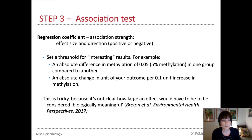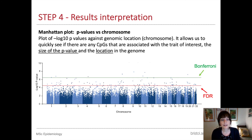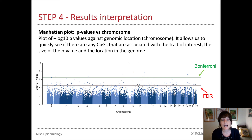The next step in running an EWAS is to examine and interpret the results. Data visualisations can really help with this. A Manhattan plot shows minus log10 p-values for the EWAS results on the y-axis and location on the genome on the x-axis, with each CPG represented by a point. CPGs with small p-values rise to the top, and we can draw lines to indicate where the different p-value thresholds lie.